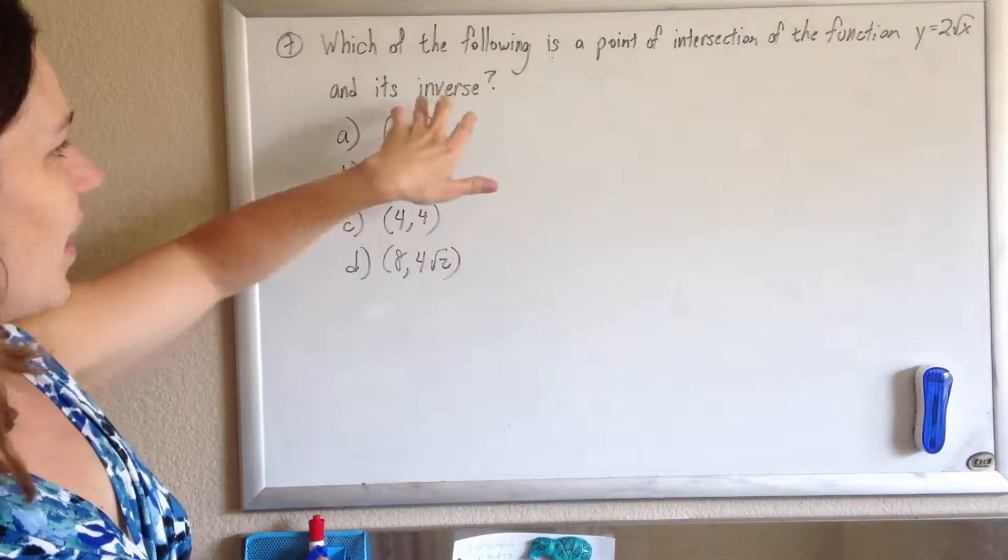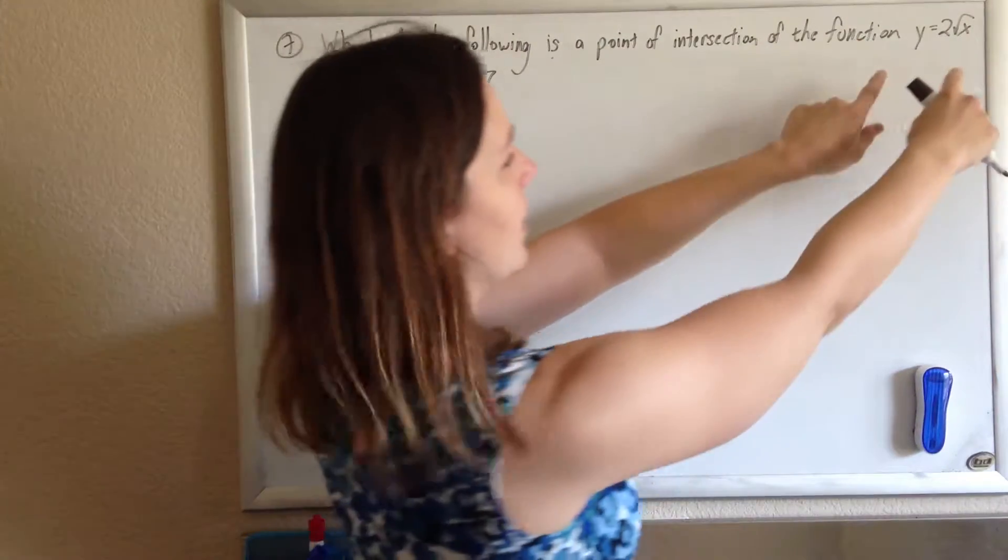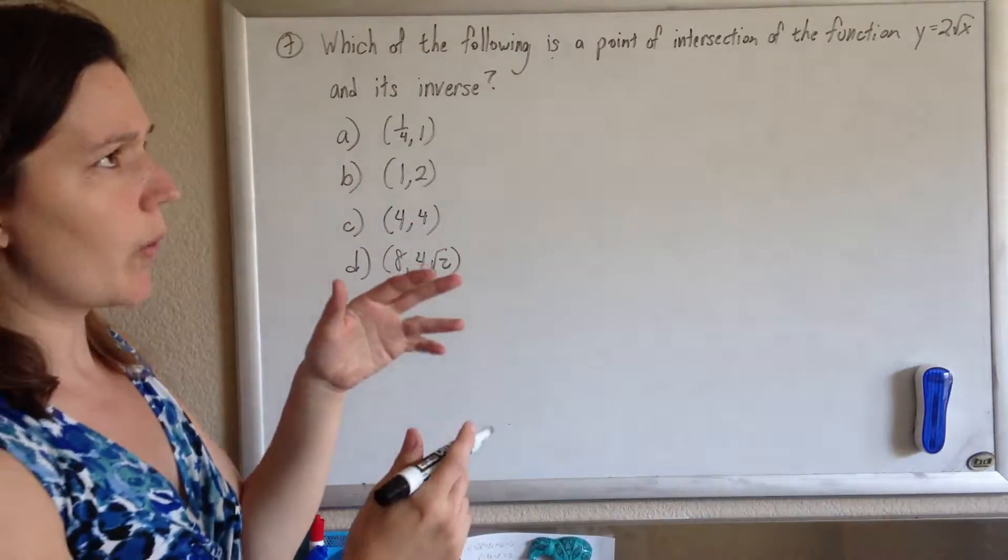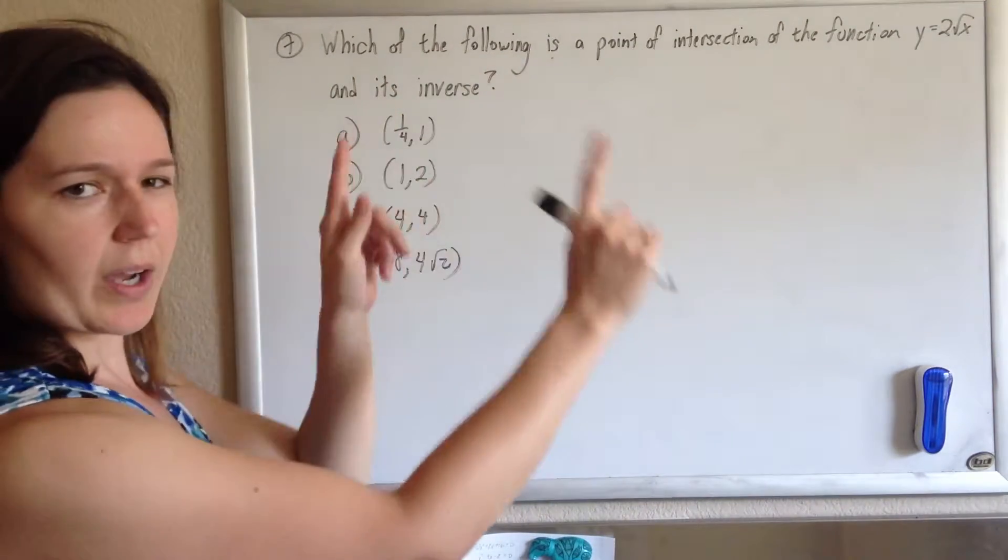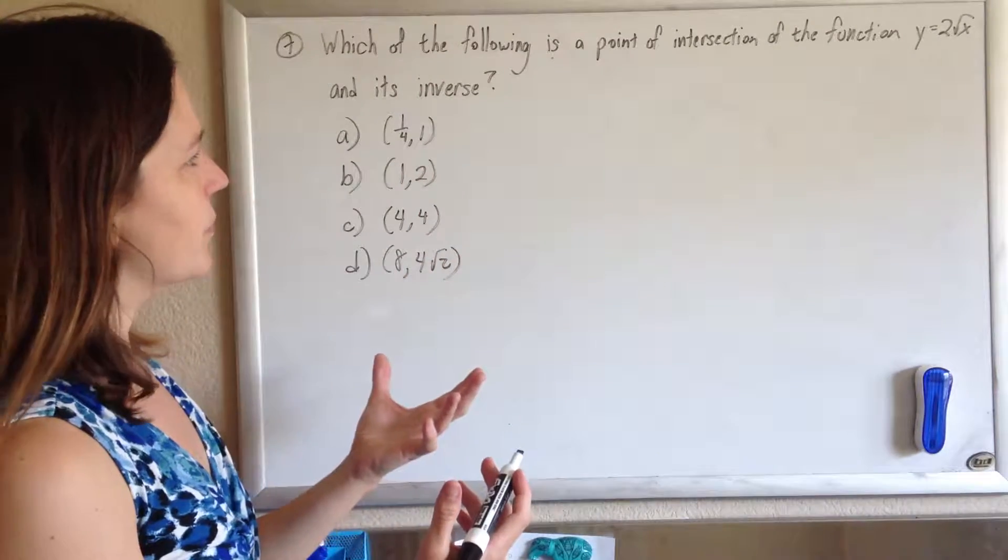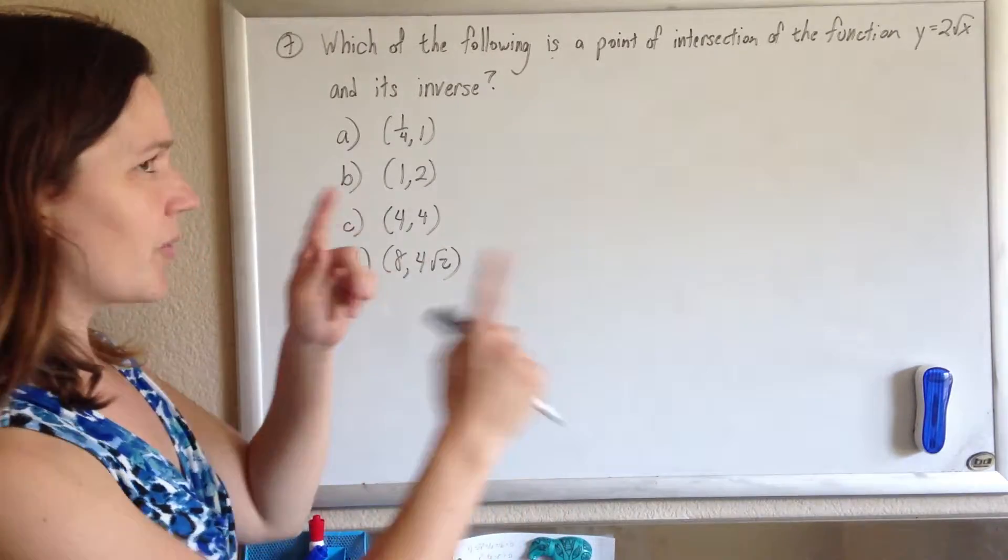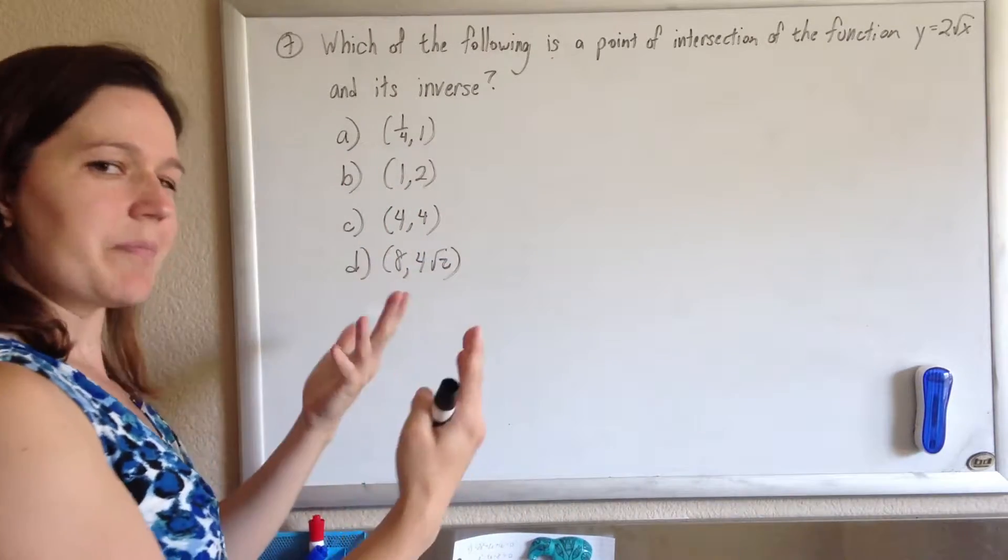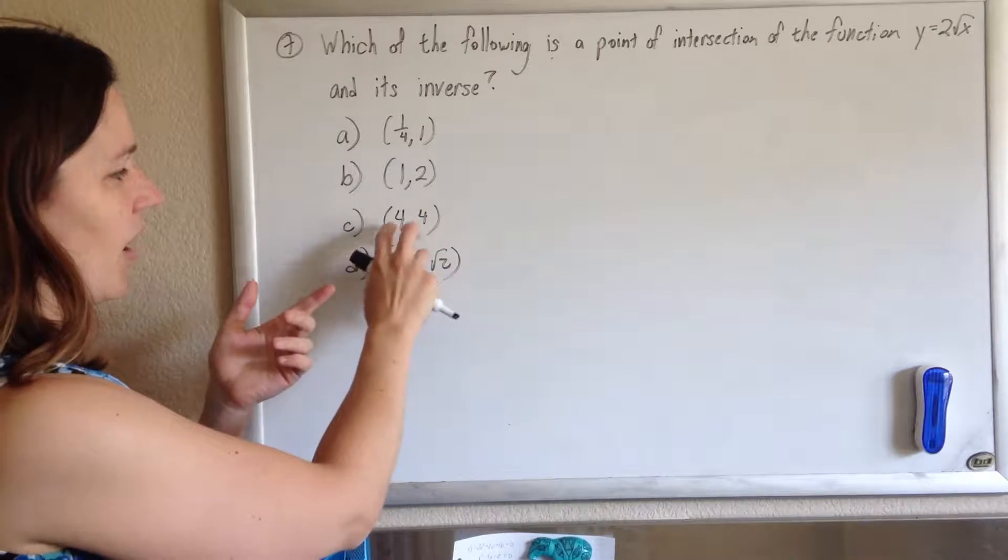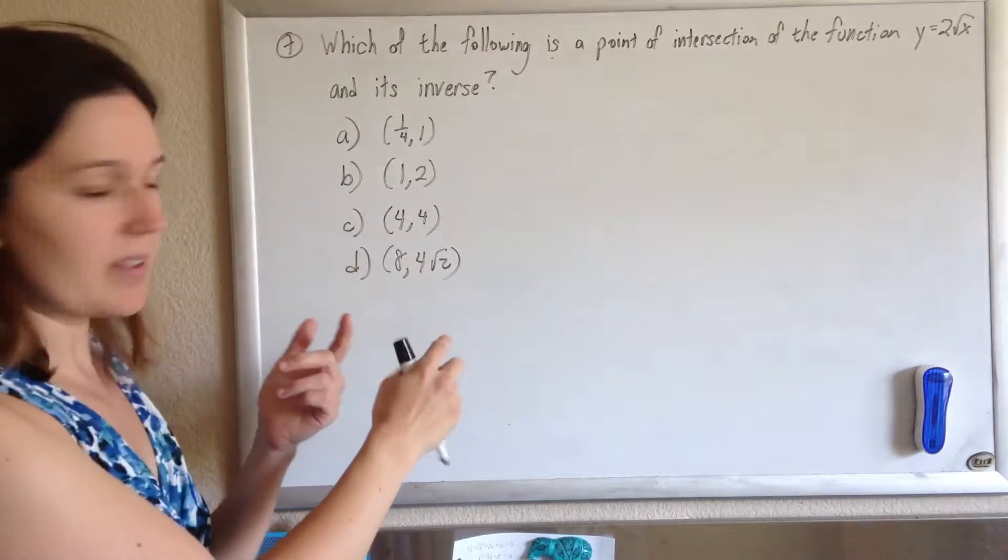because if you think about it, an inverse function inverts the x and the y. It switches the x and the y. And so, if when you switch x and y, you're supposed to get the same solution, don't the x and y have to be the same? So, any function and its inverse will intersect with the x and the y being the same.